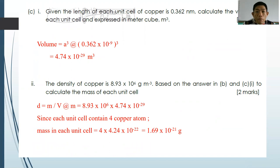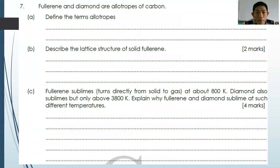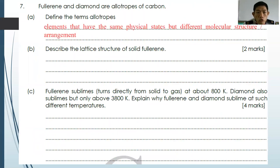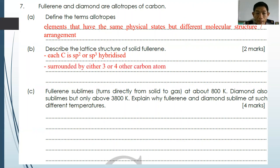That is how you solve question number six. Last but not least, question number seven: fullerene and diamond are allotropes of carbon. Define allotropes — they are elements that have the same physical state but different molecular structure arrangements. Describe the structure of solid fullerene: it is a substance where each carbon is sp2 or sp3 hybridized, and is surrounded by either three or four other carbon atoms.